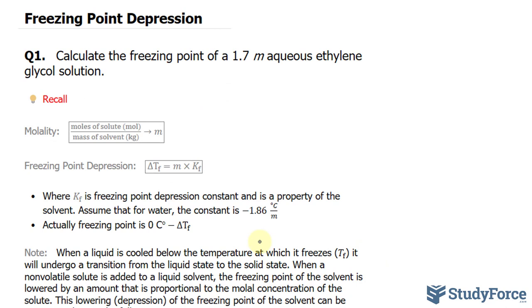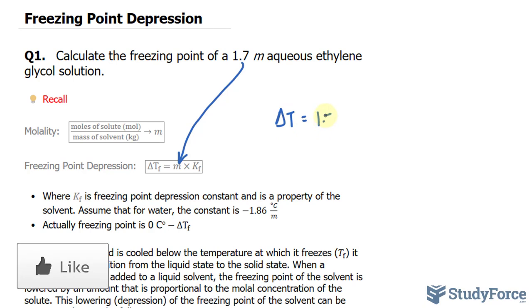So let's go ahead and figure this out. We have 1.7 M, which will be substituted into there, and we're also given the constant of 1.86. So delta T is equal to 1.7 multiplied by 1.86.